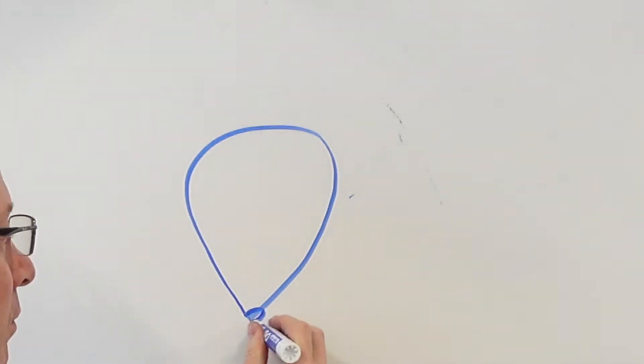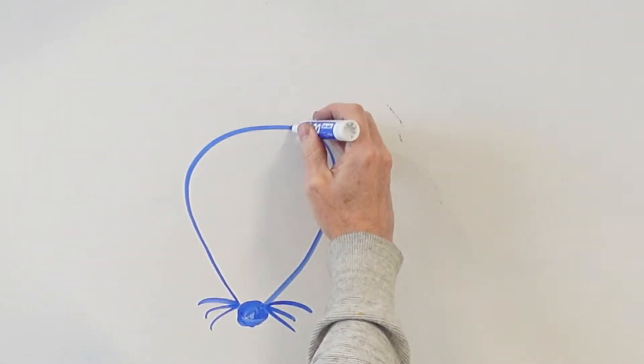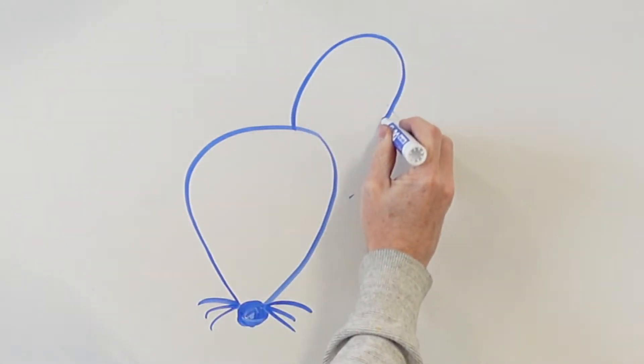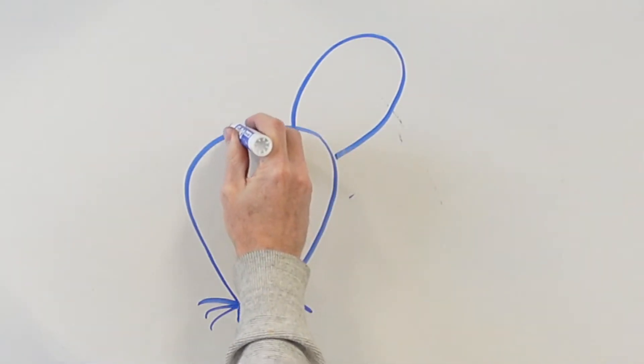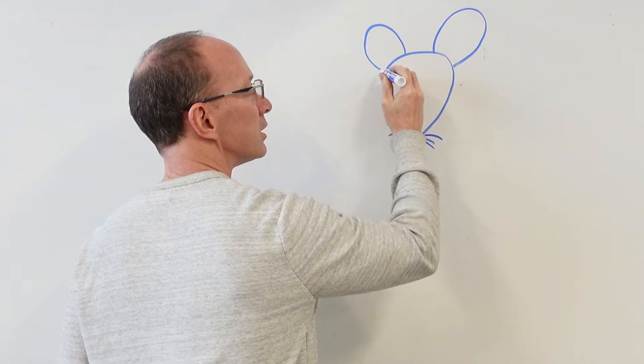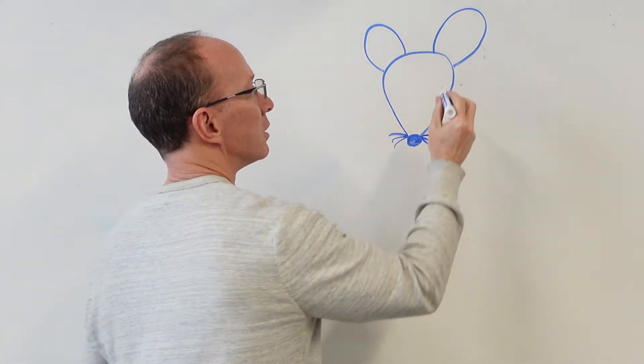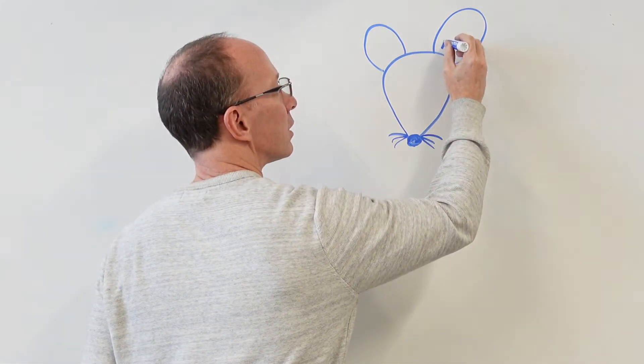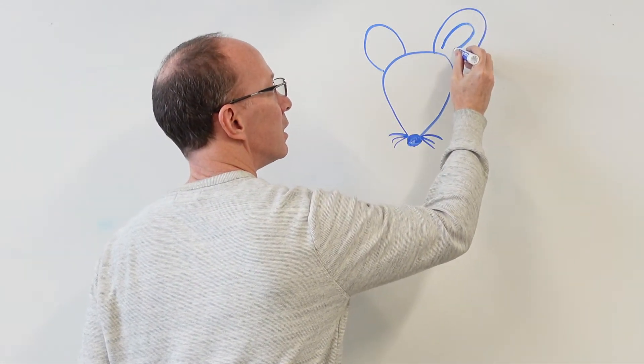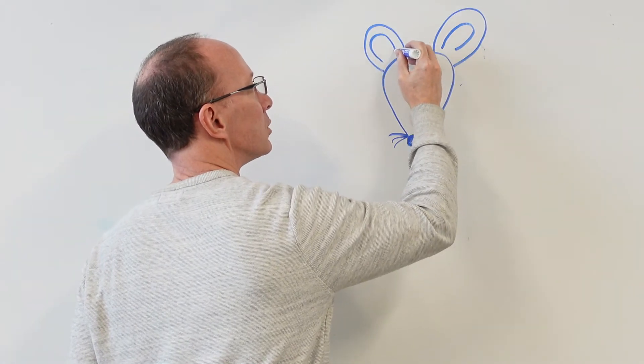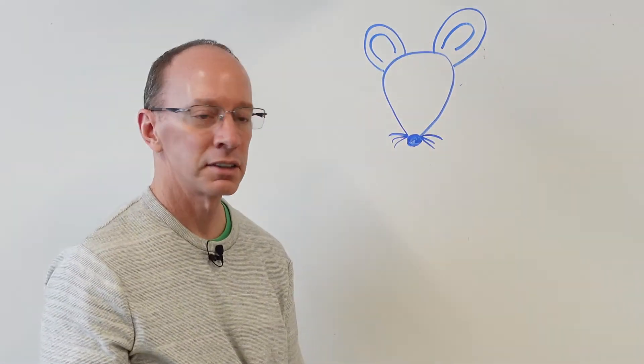Now we're going to add the nose. Then you can have the whiskers coming out. Then you can draw the ears. And sometimes what some artists will do for the ears is they will do another line that comes in here, like the inside of the ears.